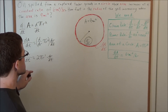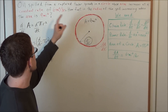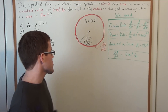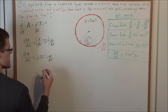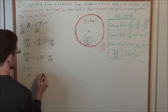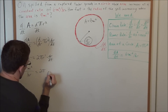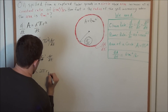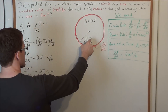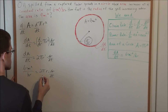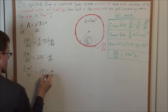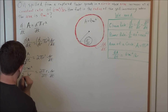Now, what information did they give us? They told us the area is increasing at a constant rate of 6 miles squared per hour — that's our dA/dt. So we substitute dA/dt with 6 miles squared per hour, giving us 6 = 2πr · dr/dt. Our goal is to isolate dr/dt, so we divide both sides by 2π.